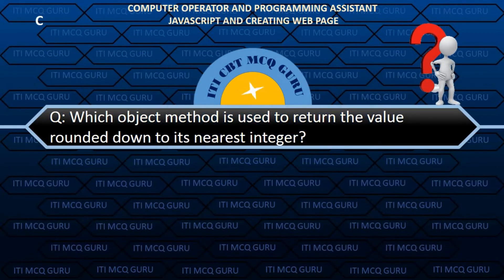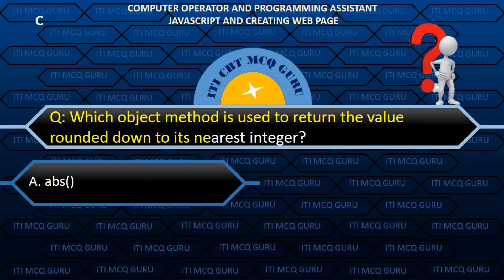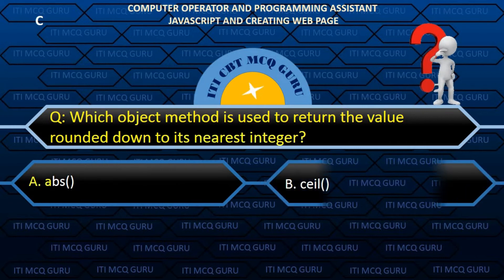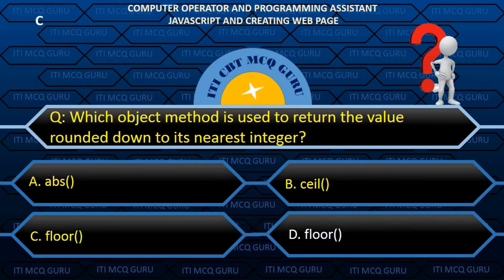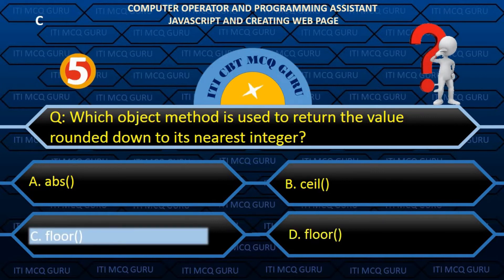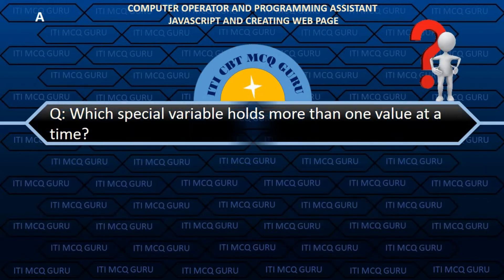Which object method is used to return the value rounded down to its nearest integer? C. Math.floor.